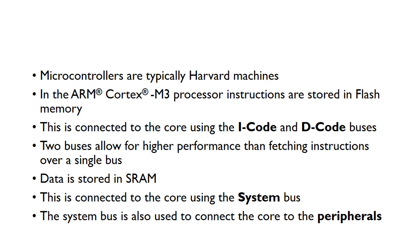Microcontrollers are typically Harvard machines. In an ARM Cortex M3 processor, instructions are typically stored in the flash memory, which is connected to the actual core using the I-Code and D-Code buses. These two buses allow for higher performance than fetching instructions over a single bus. Data is stored in completely separate memory — the RAM or SRAM — and this is connected to the core using the system bus.